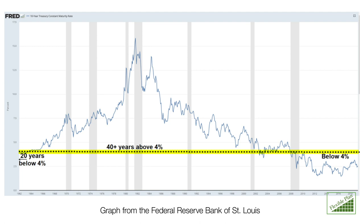But what if we don't? What if we spend the next two decades below 4%, just like we spent two decades below 4% before we broke above it back in the 1960s? That comes down to the rules-based methodologies that we employ here at Flexible Plan. Whether we go above 4% or not makes very little difference to us, because everything we do is rules-based and we will respond in accordance with what's going on in the markets as a whole.